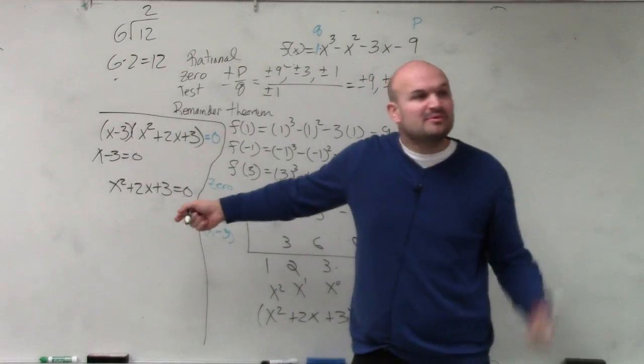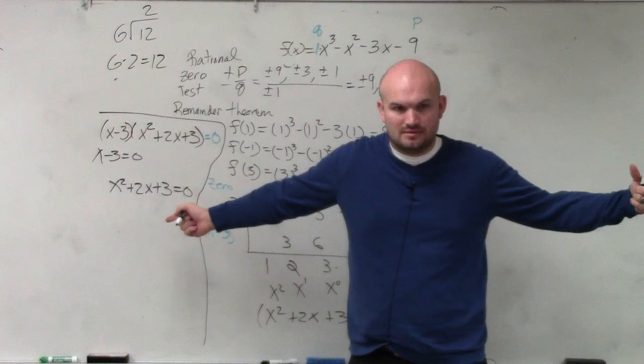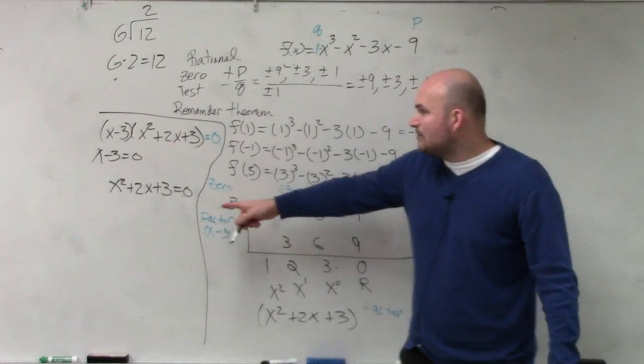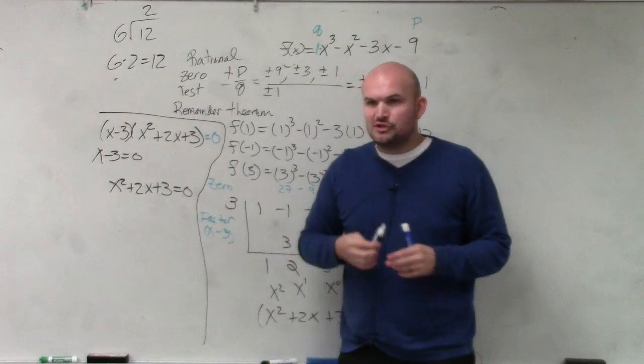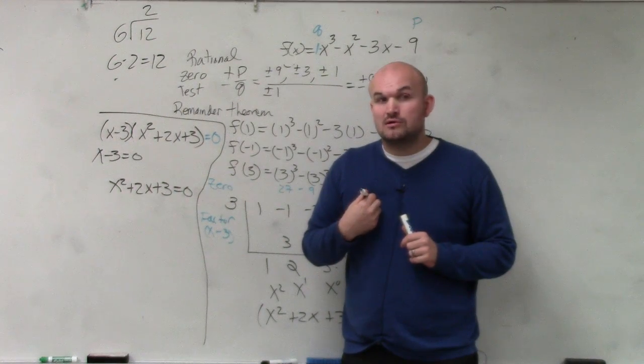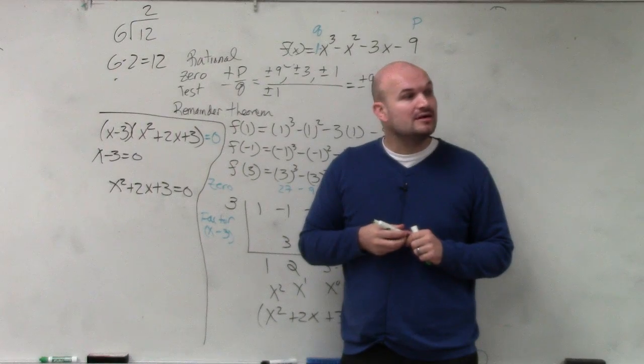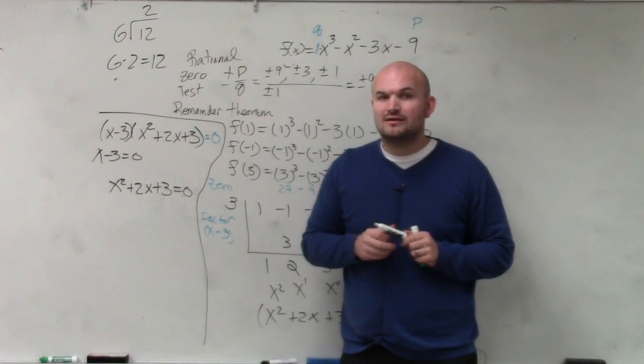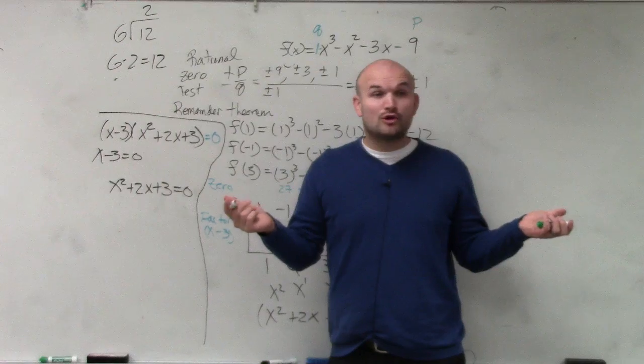But this one, to find the zeros here, remember last problem we had to factor it? So is this problem, what two numbers multiply to give you 3, add to give you 2? Can you factor that? Can you factor it? No. So guess what? You have to do completing the square or quadratic formula.